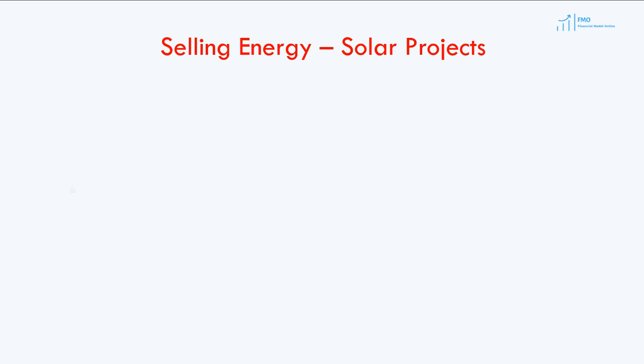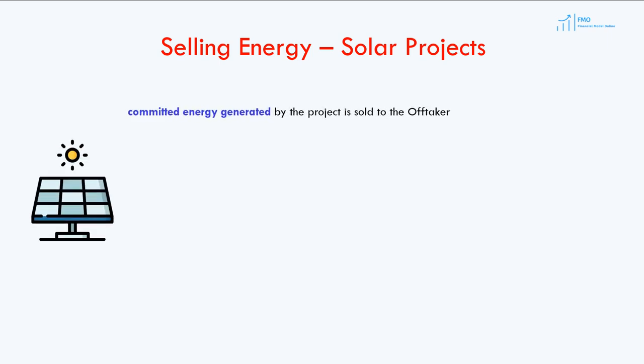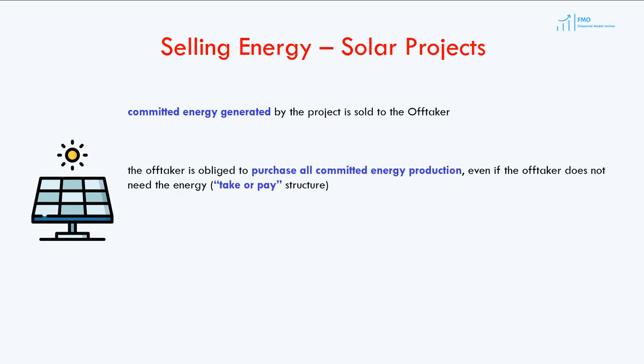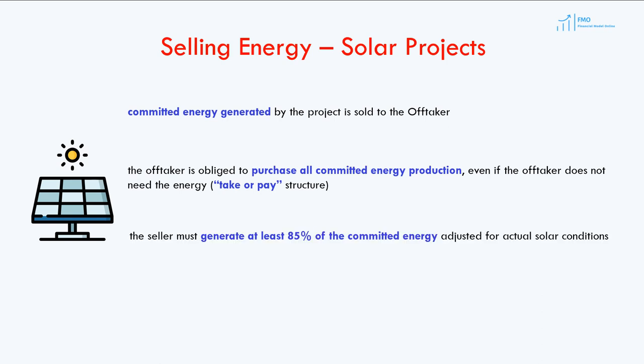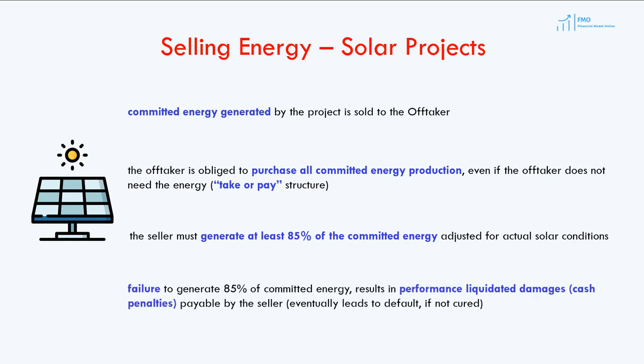Under the solar PPA, the off-taker must purchase the committed energy output, which is a forecasted energy output that will be sold to the off-taker. Similar to the wind PPA, the solar PPA follows a take-or-pay structure — the off-taker is obliged to purchase committed energy production even if it does not need the energy. Typically, the energy seller must be able to generate at least 85% of the committed energy output, subject to solar conditions at the site. Failure to generate 85% results in cash penalties, and if not cured, leads to a material breach of the PPA.